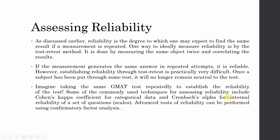Some commonly used techniques for assessing reliability include Cohen's Kappa coefficient for categorical data and Cronbach's Alpha for internal reliability of a set of questions, that is, a scale. Cronbach's Alpha is the most normally used reliability measure. However, in modern survey-based research, we normally use composite reliability to assess construct reliability, which is part of confirmatory factor analysis.